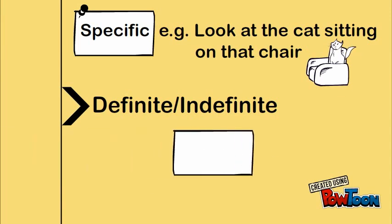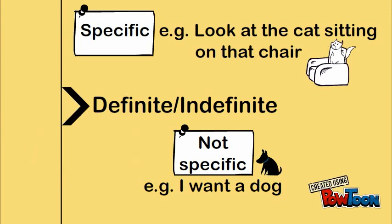Indefinite nouns are not specific. For example, in the sentence I want a dog, you do not specify which dog you want, only that you want a dog. As a result, the noun dog in this sentence is indefinite.